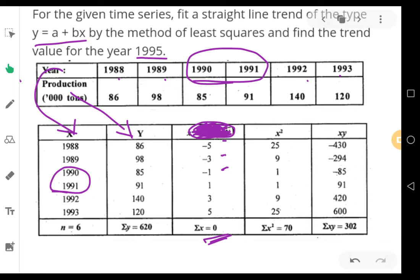You have to total the columns. First, count the number of years and write the value of n. n is the number of years, so n equals 6. Summation of y is 620. Summation x equals 0. Summation x square is 70. Summation of xy is 302. All the table parts are complete.